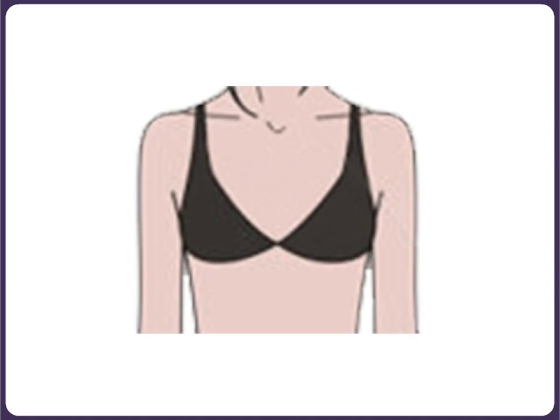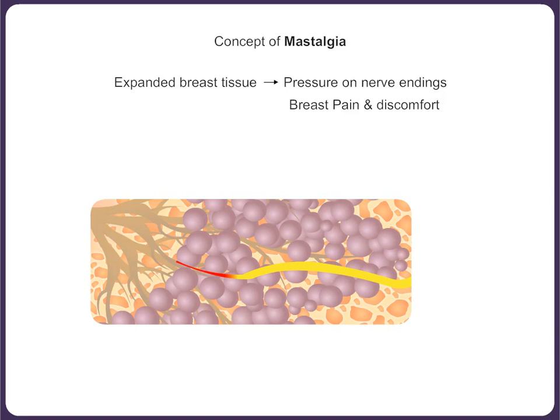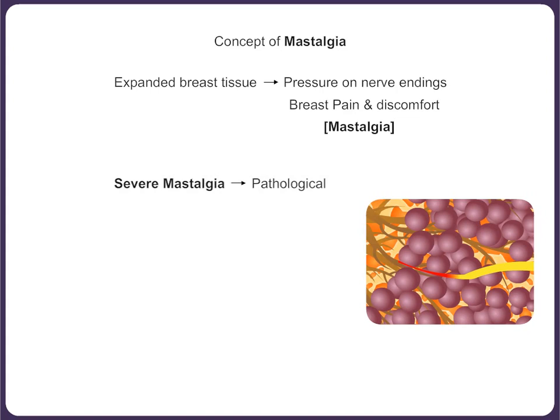The increase in breast volume causes pressure on the pain nerve endings, resulting in breast pain or discomfort. This is called mastalgia. In some degree, this mastalgia is a normal physiological response. However, when it becomes severe and lasts for more than a week, disturbing the activities of daily life, we need to consider it as pathological and treat it.